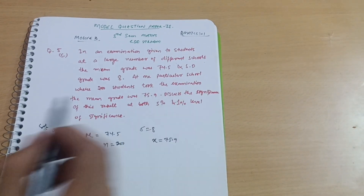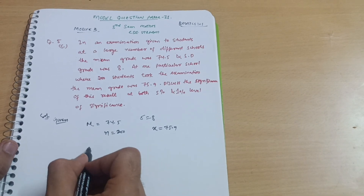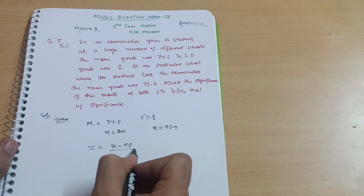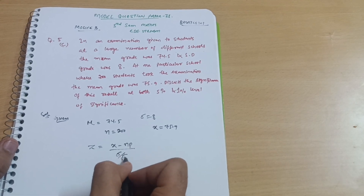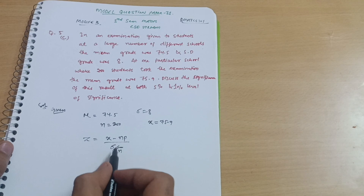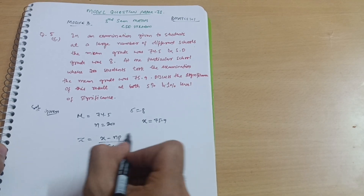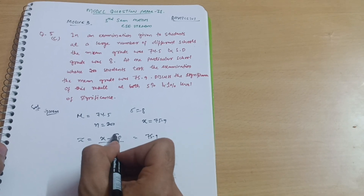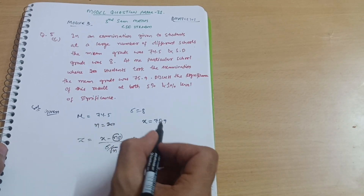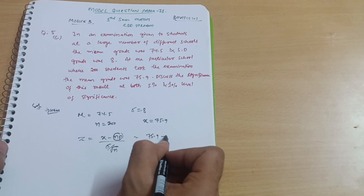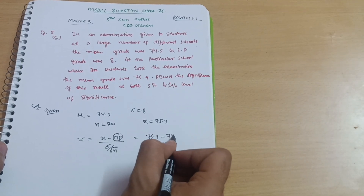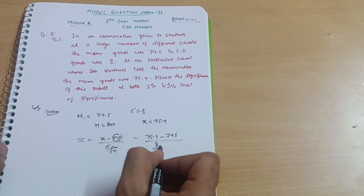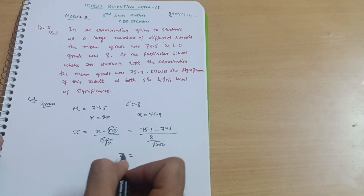Now, the formula for z is: z is equal to x minus mu divided by sigma divided by under root of n. We use this formula because sigma is directly given. The observed value x is 75.9, mu is 74.5 — that is the expected value — so it is 75.9 minus 74.5, divided by sigma which is 8, divided by under root of n which is 200.